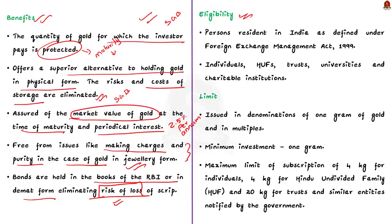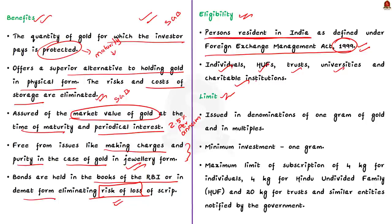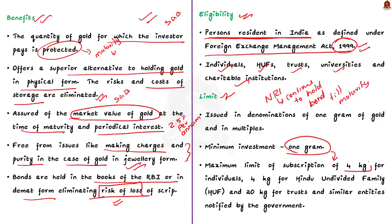Persons resident in India as defined by the Foreign Exchange Management Act 1999 are eligible to invest in Sovereign Gold Bonds. Eligible investors include individuals, Hindu Undivided Families, trusts, universities, and charitable institutions. Individuals with a subsequent change in residential status from resident to non-resident may continue to hold the bonds till early redemption or maturity. The bonds are issued in denomination of one gram of gold and in multiples thereof. The minimum investment is one gram, with a maximum limit of 4 kg for individuals, 4 kg for HUFs, and 20 kg for trusts and similar entities.